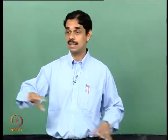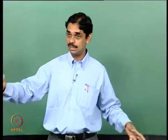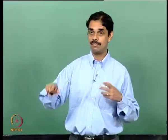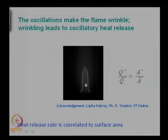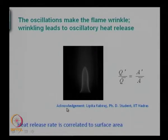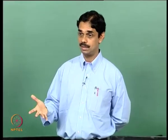You are having a fluctuating heat release in a confined environment, so there are acoustic oscillations and we have a feedback. The key message is: oscillations make the flame wrinkle, wrinkling leads to oscillatory heat release. So Q-prime correlates with area fluctuations, and we need to solve for the area fluctuations of the flame — that is the crux of the matter.